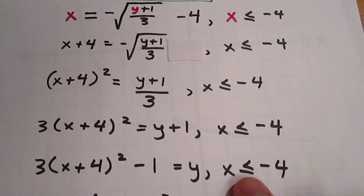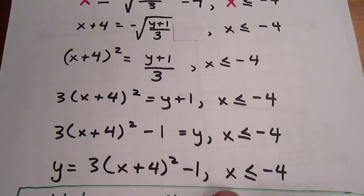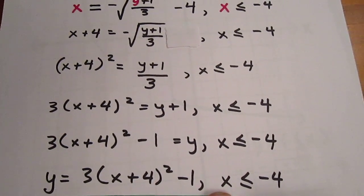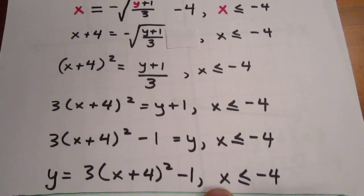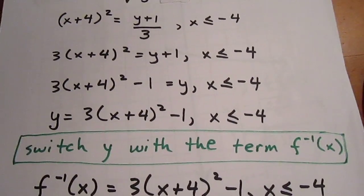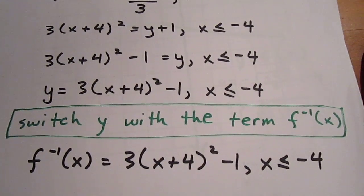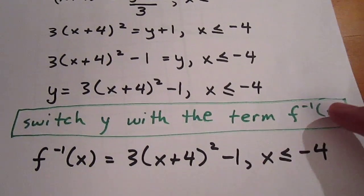And since we know x is less than or equal to negative 4, we can put that on the side with the x terms and we can say y is equal to that quantity right there with x less than or equal to negative 4. We switch y with that term, and what we have is f inverse of x equaling 3 bracket x plus 4 quantity squared minus 1, x is less than or equal to negative 4.